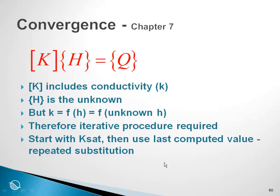The issue is that the conductivity is in this part of the solution. [K]{H} = {Q}. [K] includes conductivity (k), {H} is the unknown, the head that we want to compute at every node. But our conductivity is a function of the head, and so we have a problem in that we don't know the head, so how can we define the conductivity?